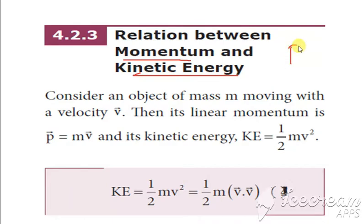As we know, momentum is denoted by P and we have the formula for momentum which is given by M into V. And kinetic energy, we already know the formula which is half MV square.